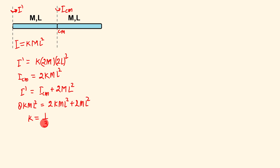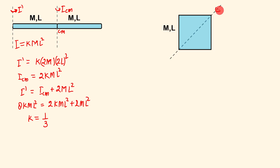So it's a pretty neat method. Let's jump to another case — we are building bit by bit. Let's take the case of a uniform square sheet. We have to determine the moment of inertia about the face diagonal of this square sheet. Again, I can say that the moment of inertia is going to be equal to KML². K will be something different, and if you know the result, you know that this is going to be equal to (1/12)ML².